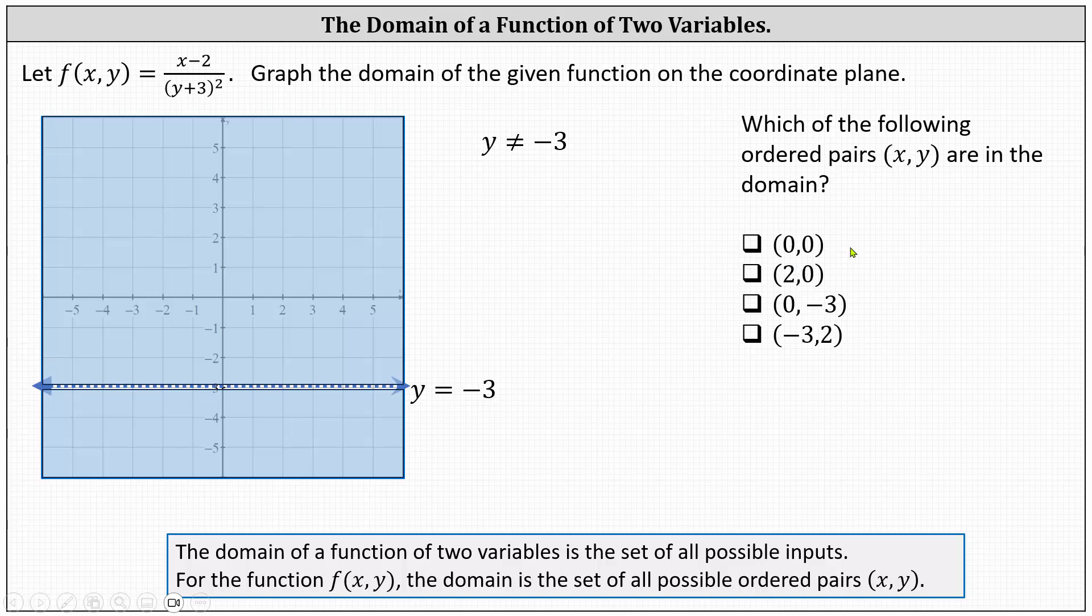So zero comma zero is in the domain. Two comma zero is in the domain. Zero comma negative three is not in the domain. Notice this point would be on the dashed line, y equals negative three.